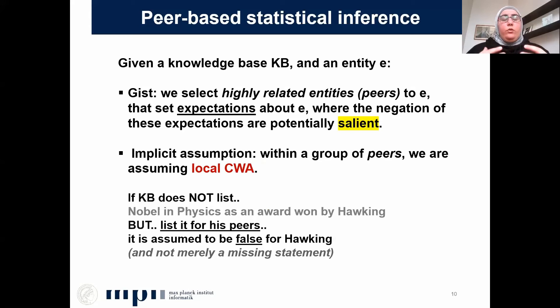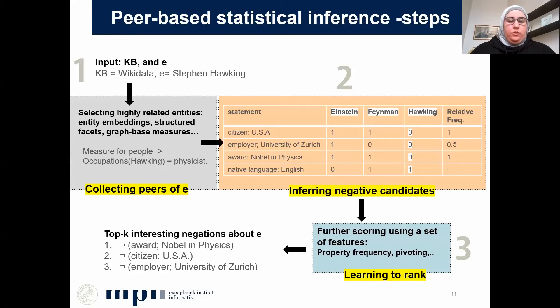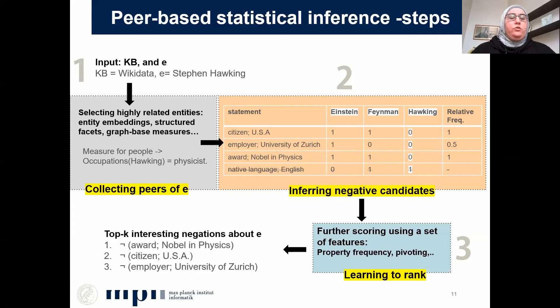Let's go through the steps in more detail. Given a knowledge base and an entity — say the knowledge base is Wikidata and the entity is Hawking — we first start by collecting Hawking's peers, which are highly related entities. Many options are suitable here, for example using entity embeddings and cosine similarity to get the closest neighbors. Another option is structured facets, where we assign type-like facets to group entities. For people, it could be occupations. So one of Hawking's peer groups is other physicists.